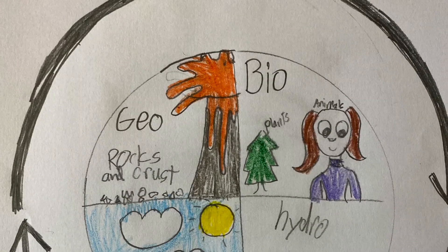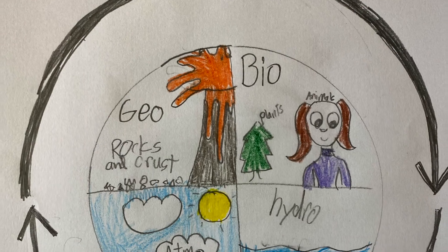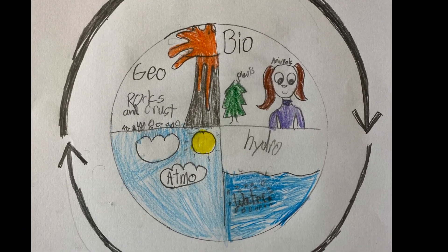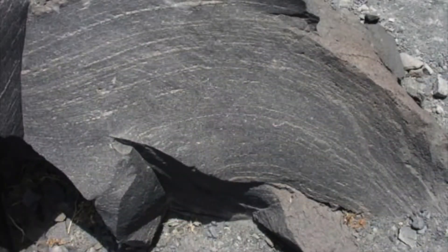The same amount of carbon that was here at Earth's beginning is still here today. Carbon continuously cycles through the spheres of Earth: the geosphere, hydrosphere, biosphere, and atmosphere. When we look at our natural world, we can break it into four spheres. The geosphere is found at our feet — it is the rocks and the crust of Earth.